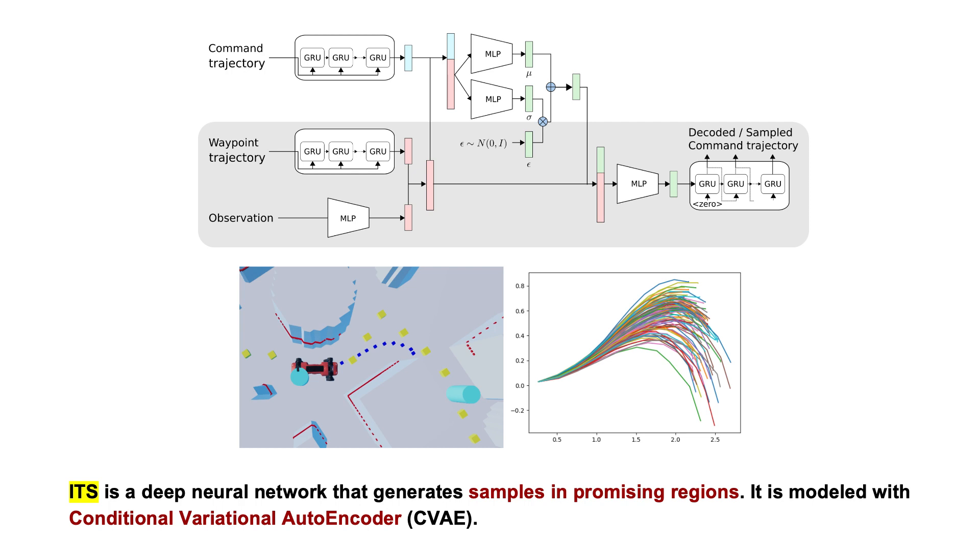ITS is a deep neural network that generates samples in promising regions. It is modeled with conditional variational autoencoder.